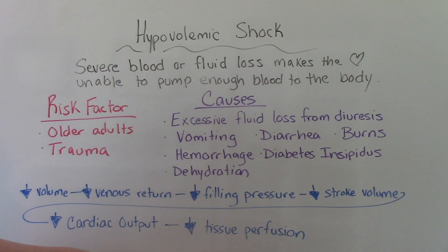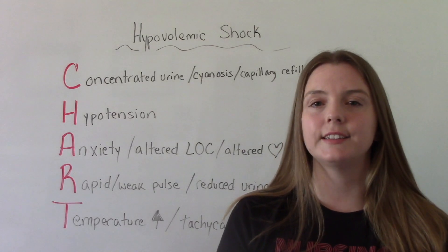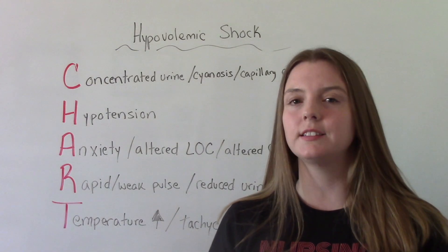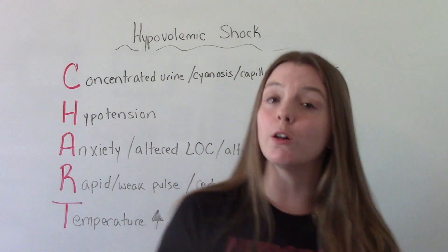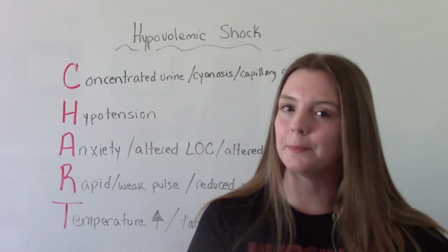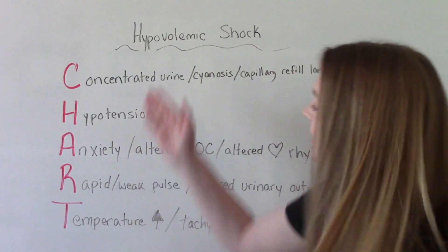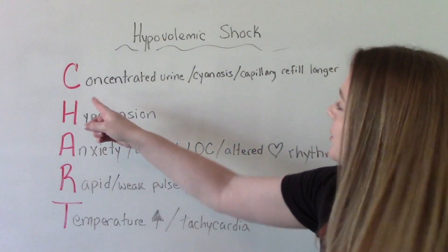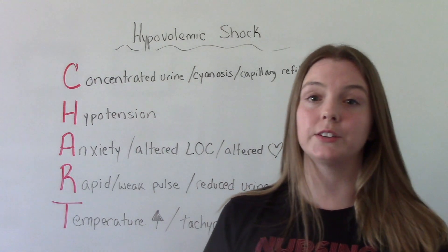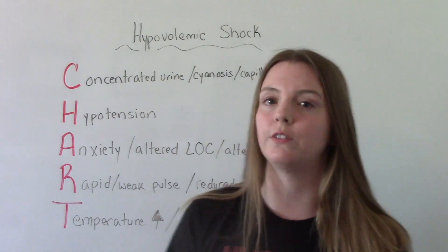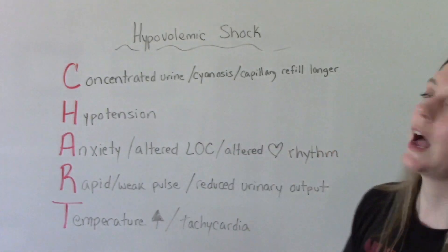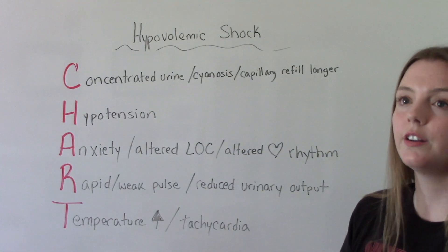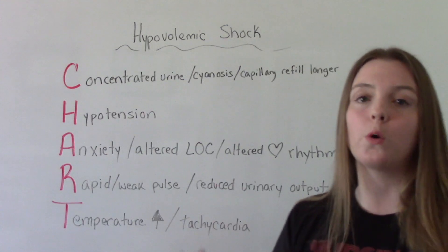All of this means there's not enough blood for the heart to pump out to the rest of the body — that's what leads to decreased tissue perfusion. When it comes to signs and symptoms, it really depends on the percentage of blood that has been lost. A helpful mnemonic to remember some of these signs and symptoms is CHART. C is for concentrated urine, because we have low fluid volume. They're going to be cyanotic, and their capillary refill time is going to be longer, which is reflective of that poor tissue perfusion.